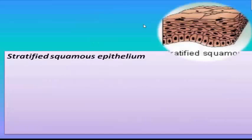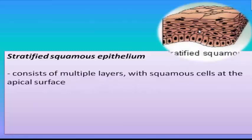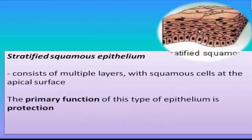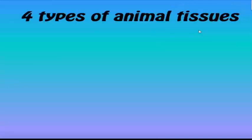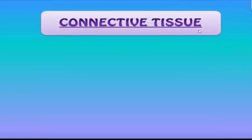Next is stratified squamous epithelium. Stratified means two or more layers, and squamous means flat. This consists of multiple layers with squamous cells at its apical surface, and the primary function of this type of epithelium is protection. So we have four types of animal tissue cells, and the second major type is connective tissue.